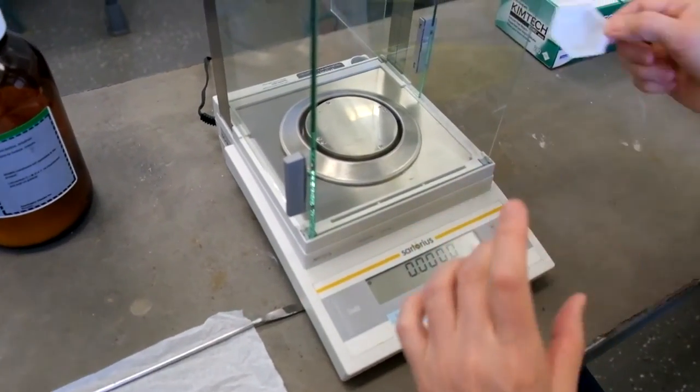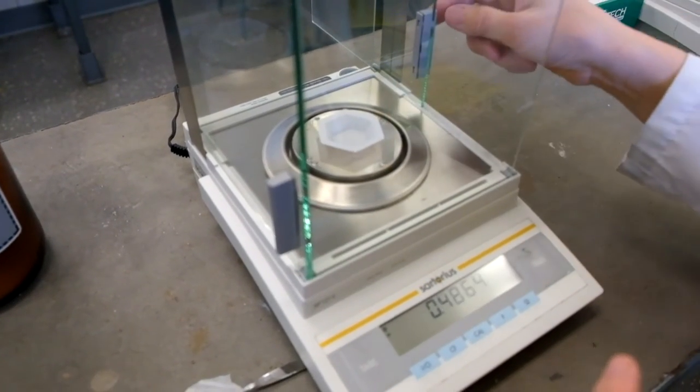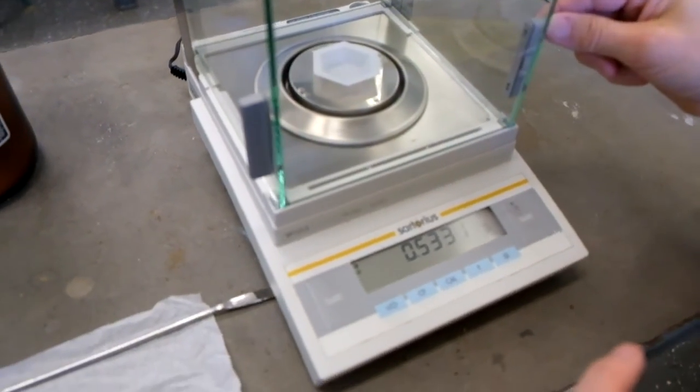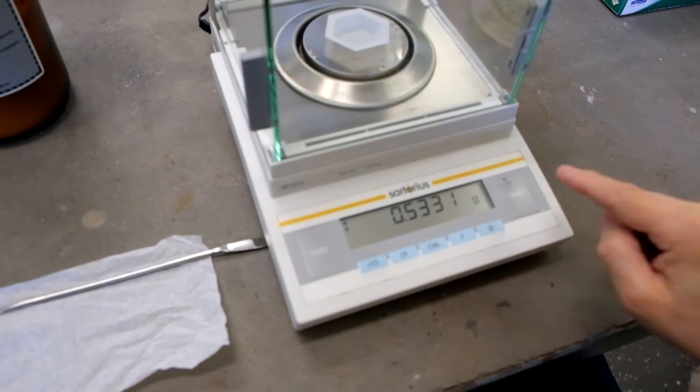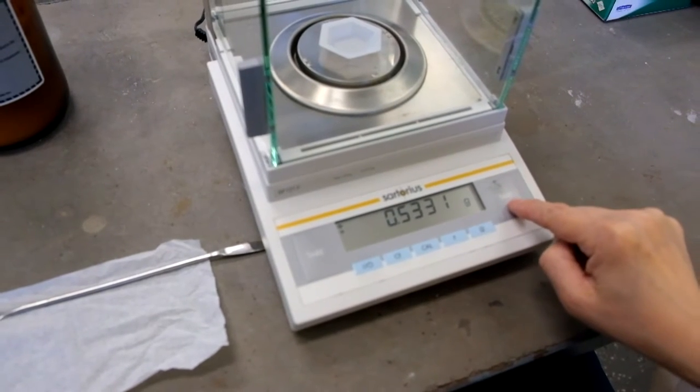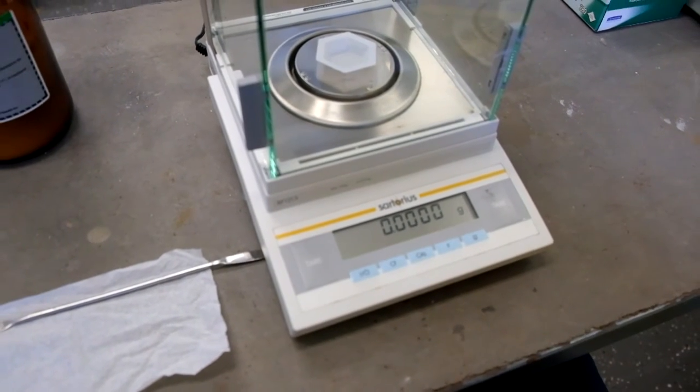Place the weigh boat on the balance, close the door and press the tare button. Notice that with the weigh boat on the balance, the balance display reads 0.0000 grams.